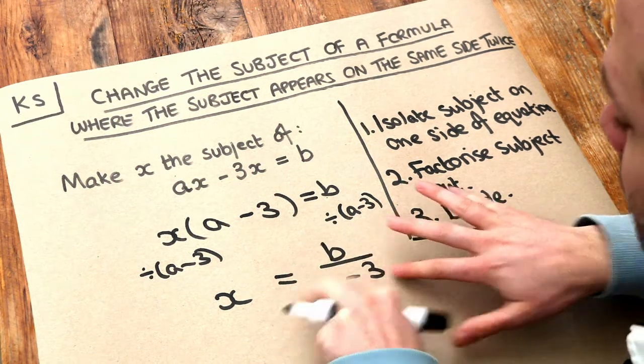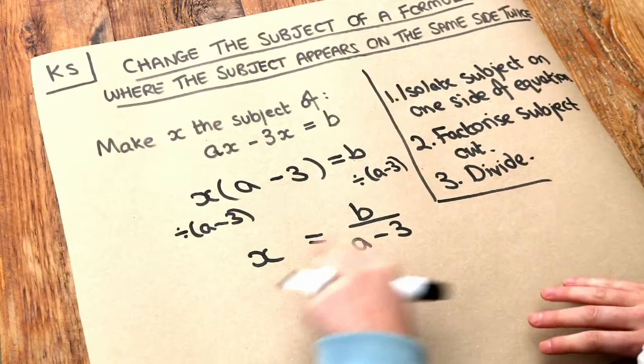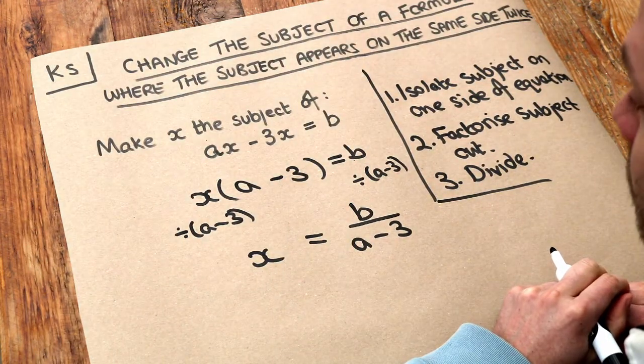We don't need the brackets because there's nothing else around that denominator. That's the final answer. We've got x on its own on one side of the equation, so it's therefore the subject.